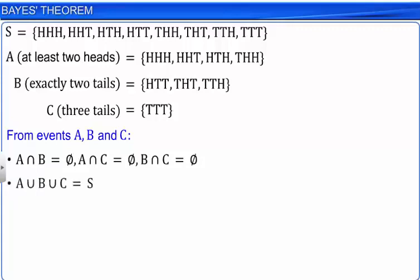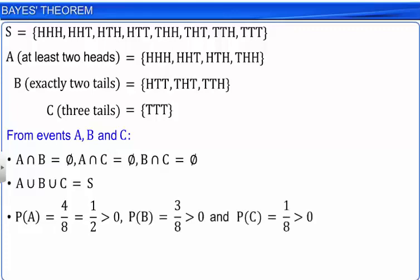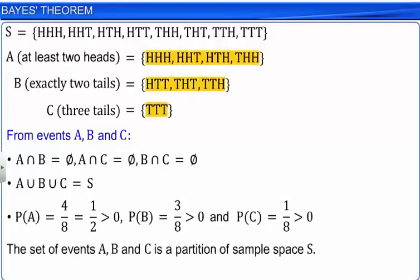And the union of events A, B, and C is sample space S. The probability of event A is 1/2, event B is 3/8, and event C is 1/8. The set of such events A, B, and C of a sample space is the partition of the sample space.